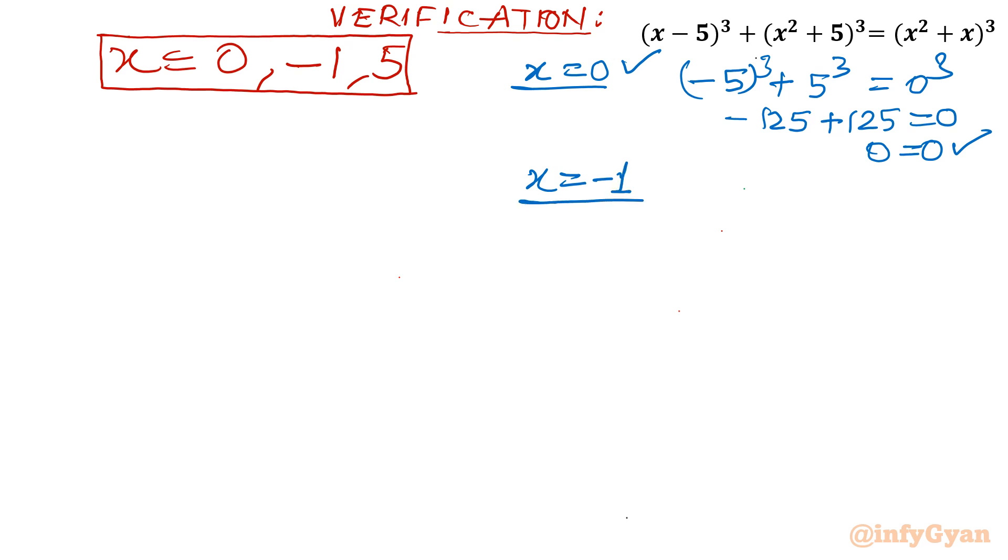For x = -1, putting -1 there, then 6³. Then -1² is 1, and (-1)³ is -1. So it is -216 + 216 = 0. That means 0 = 0. So 0 = 0.